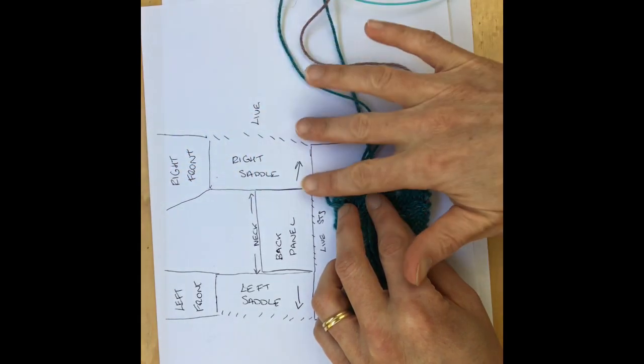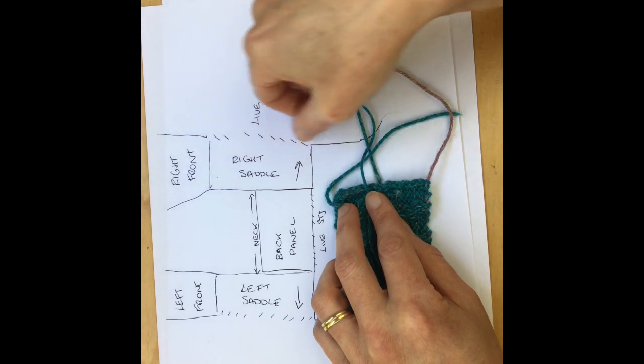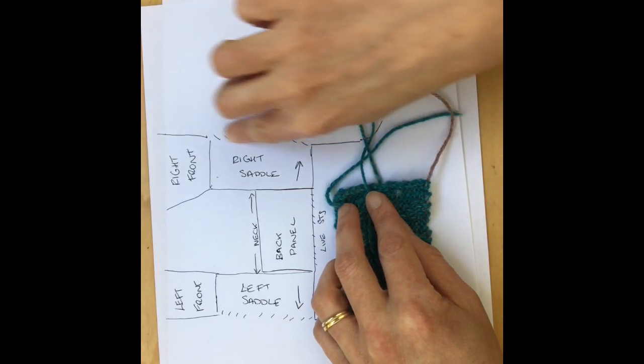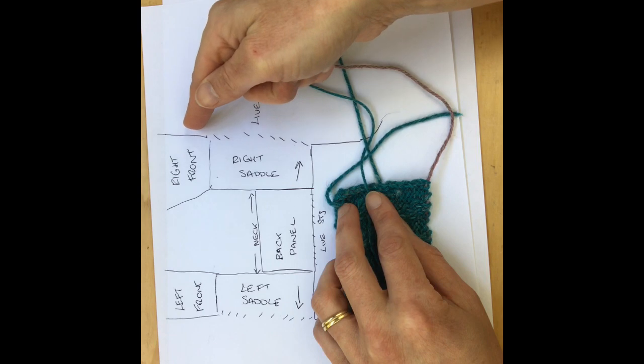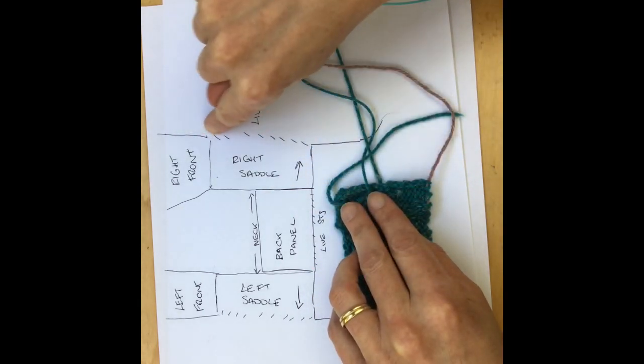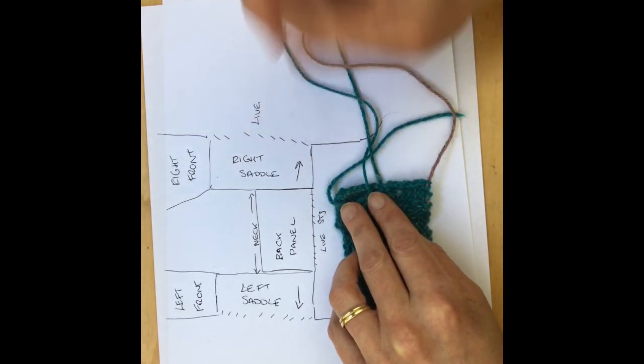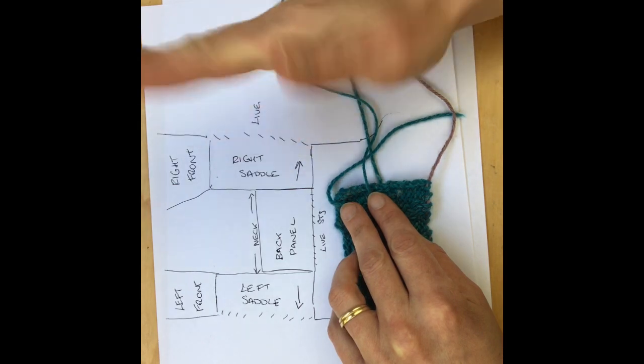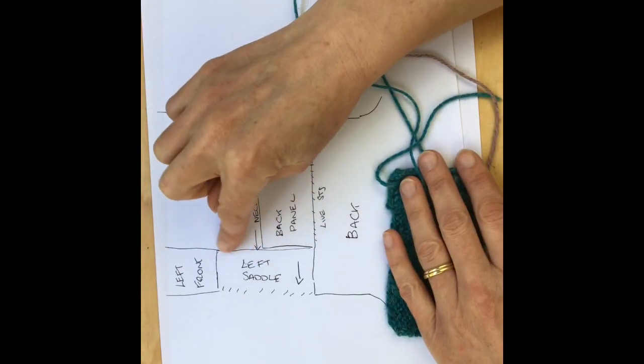And then you're going to knit this to the width that your shoulder is, which will be a few inches all the way along here. And then you'll do like you did with this back panel and you'll break the yarn and just put those stitches on a spare holder.